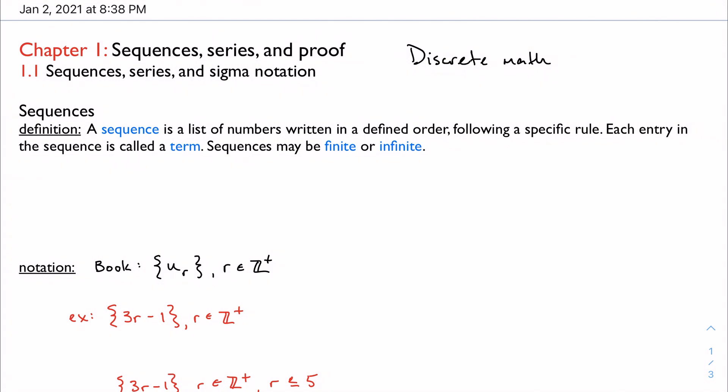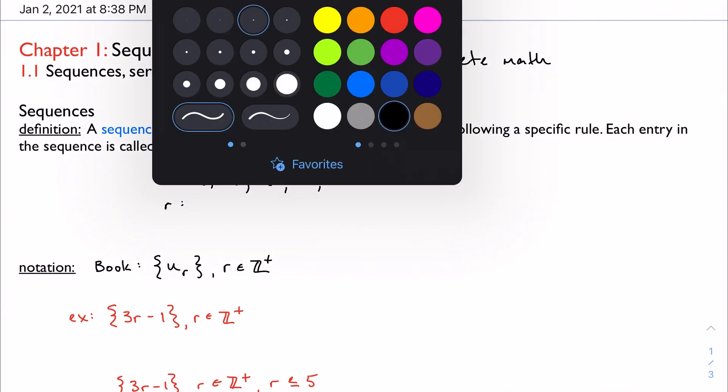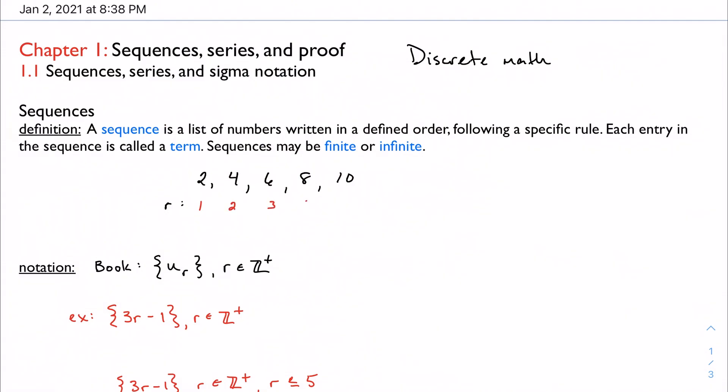A sequence is a list of numbers written in a defined order following a specific rule. Every entry in the sequence is called a term and sequences may be finite or infinite. So maybe I have some kind of a sequence and it's just 2, 4, 6, 8, 10, we keep it easy, right? Well, we can assign a number to each of those terms. We call it the term number and our book tends to use R for that in this chapter. So our first term is 2 and our second term is 4, 3, 4, 5.